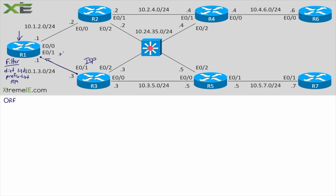What we can do with ORF is use a prefix list and the ORF capability to actually send the service provider what we want to filter. The service provider will then use its own resources to not send us those prefixes. We're minimizing the resources used on our own device and moving those resources over to the service provider. We control the filtering — we tell the SP what to filter and allow, and the SP does the actual filtering for us.